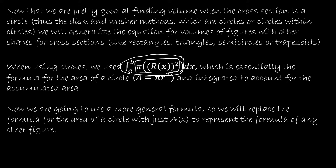Now, shifting gears, we're no longer going to exclusively use a circle. We're going to be able to replace A(x) with whatever the formula is for our cross section. So our more general formula for volume is going to be the integral from a to b of A(x) dx. The A(x) will just be replaced by the formula for the area of a square, rectangle, or trapezoid — whatever the cross sections are.